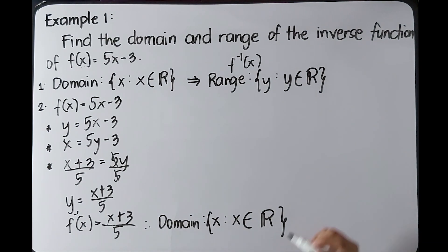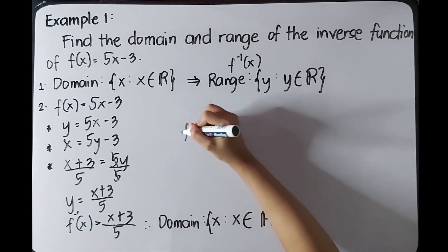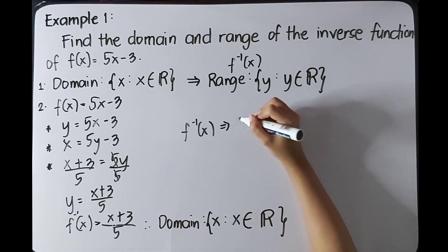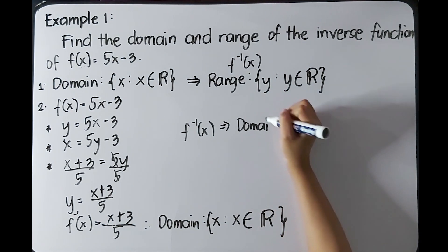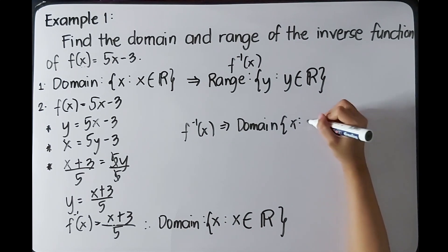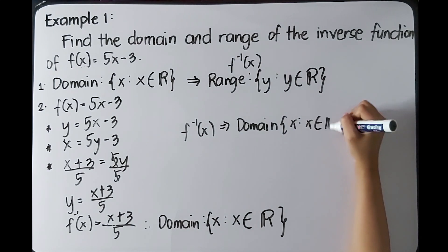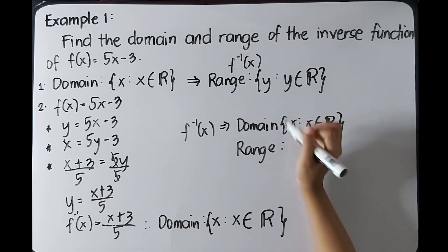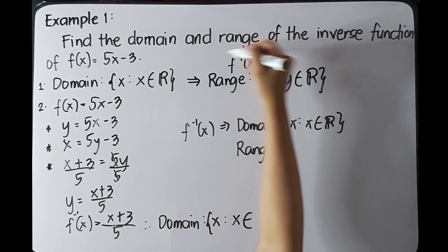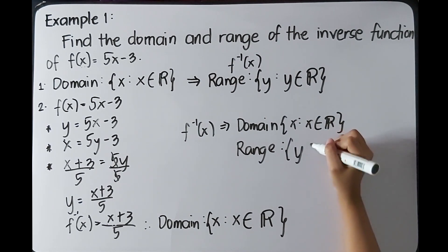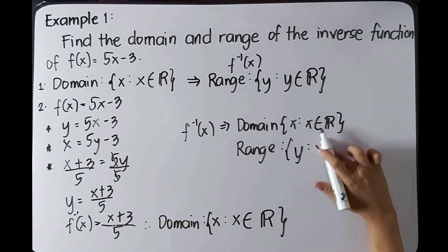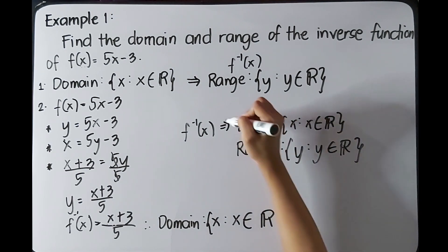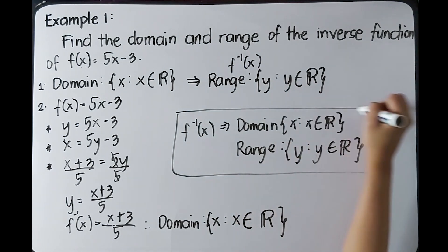For the final answer: the inverse function f⁻¹(x) has a domain where x is an element of real numbers, and its range — which is the domain of the original function — is y such that y is also an element of real numbers.